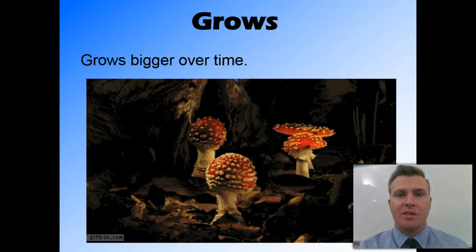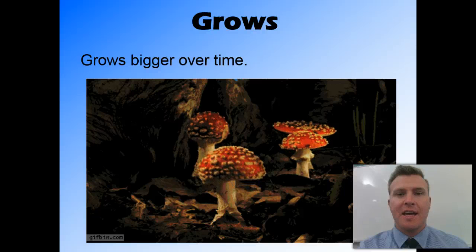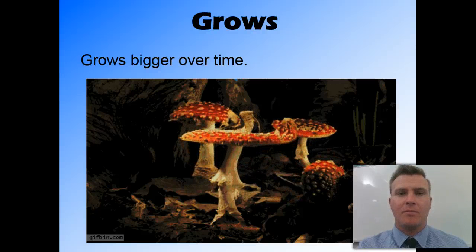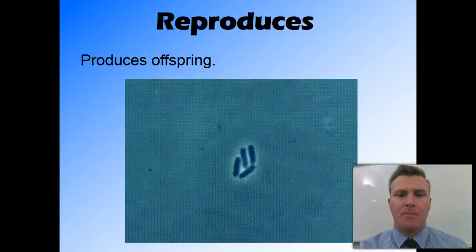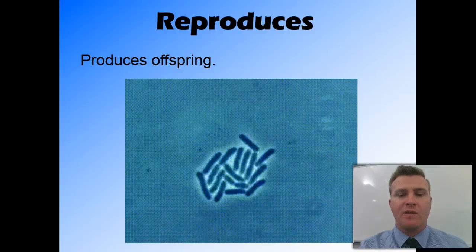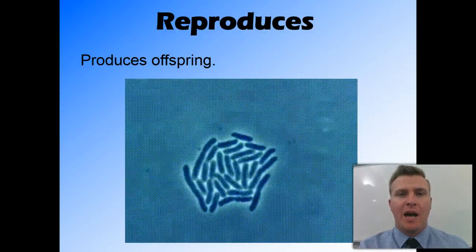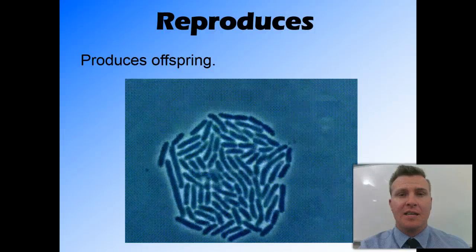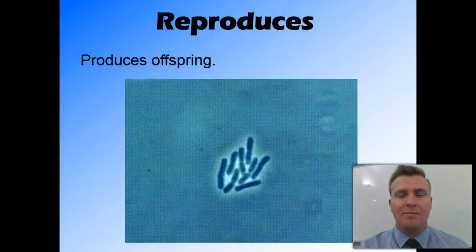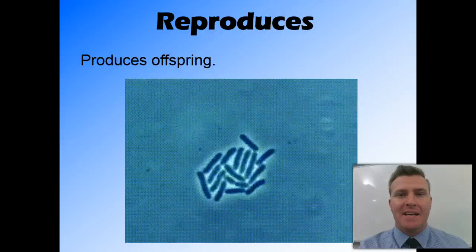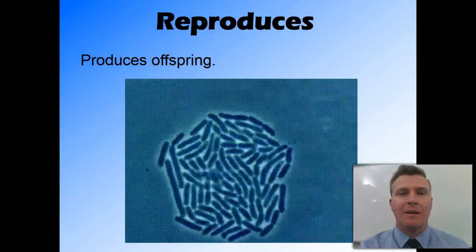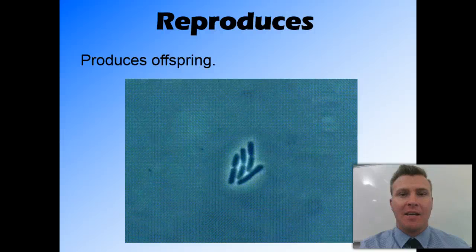Growing is pretty self-explanatory — it gets bigger over time. Reproduces means it produces offspring. This can either be sexually, as occurs in animals and plants, or asexually, which also occurs in some plants, but as well in bacteria and fungi.